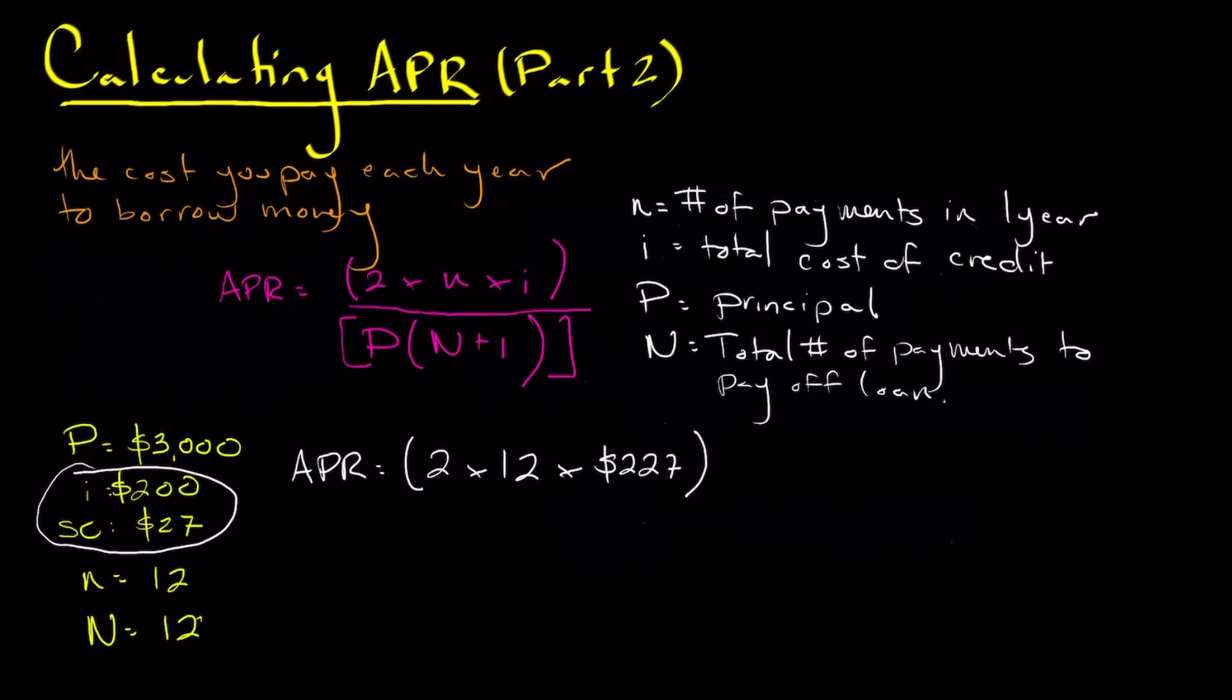Now we're going to divide that by what is our principal, which is the $3,000 that we borrowed for the loan. And we're going to multiply that by the number of payments in the actual loan, which is 12, plus 1.